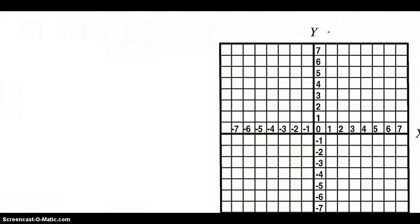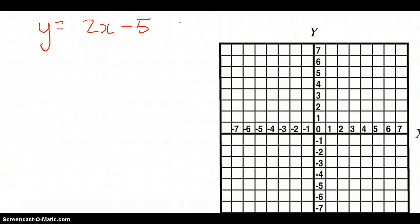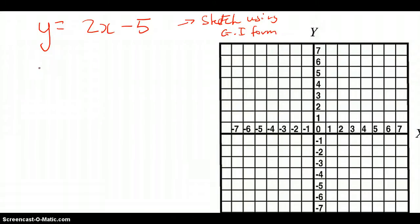Now let's move on to sketching. The first equation I'm going to get everyone to sketch is y = 2x - 5. We're going to sketch this using gradient intercept form. When solving these questions, there are two things you need to dissect: one — what is the gradient, which is otherwise known as the rise over run?